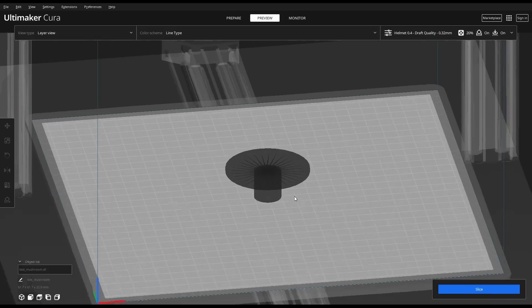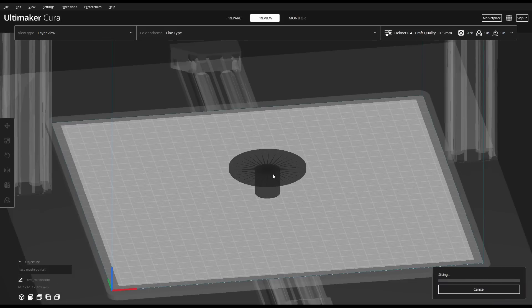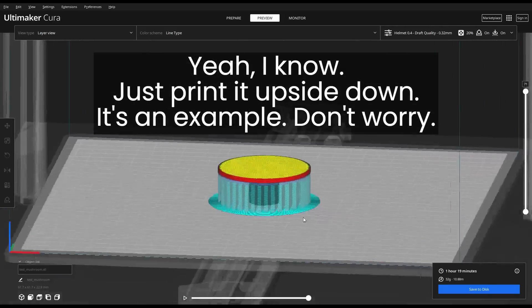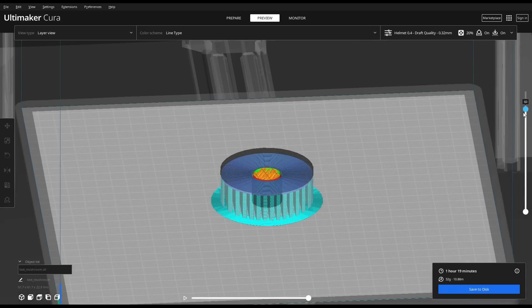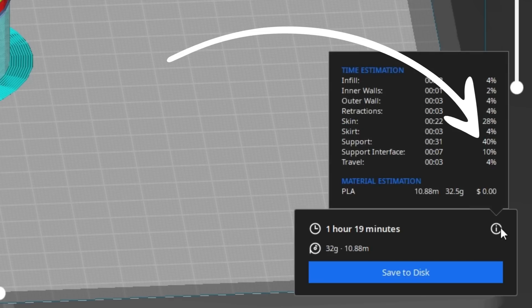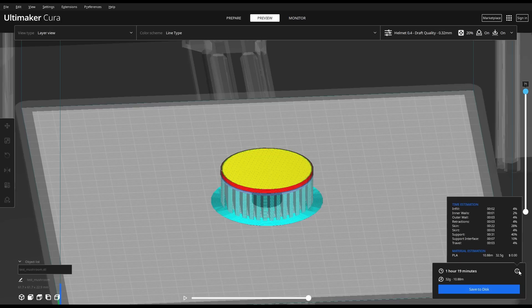One of the main problems this technique addresses is the need for support material. Support material is annoying, and none of us would really like to print it unless we have to. Supports end up just being thrown away in the trash, they're a waste of filament, they waste your time because it makes your parts take longer to print, and they're a real pain to remove.